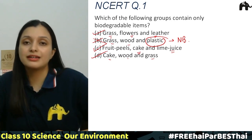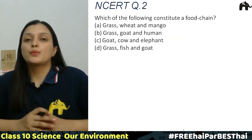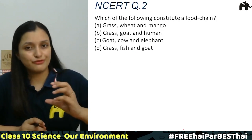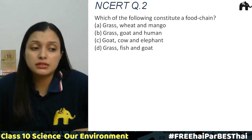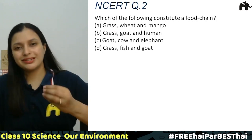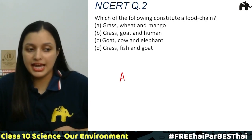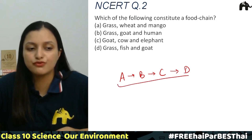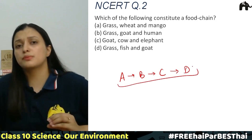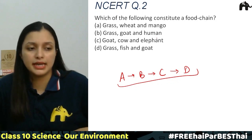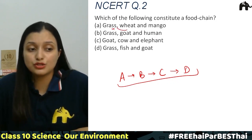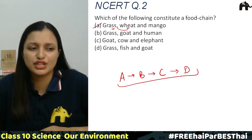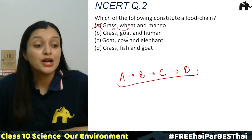Question number two: which of the following constitute a food chain? Food chain का मतलब है कि A को B खाता है, B को C खाता है, C को D खाता है। तो ऐसी food chain कौन से option में है? पहला option है grass, wheat, mango — grass को wheat खाएगा? No, यह correct नहीं है, ये सारे के सारे plants ही हैं, इसमें कोई food chain नहीं है।